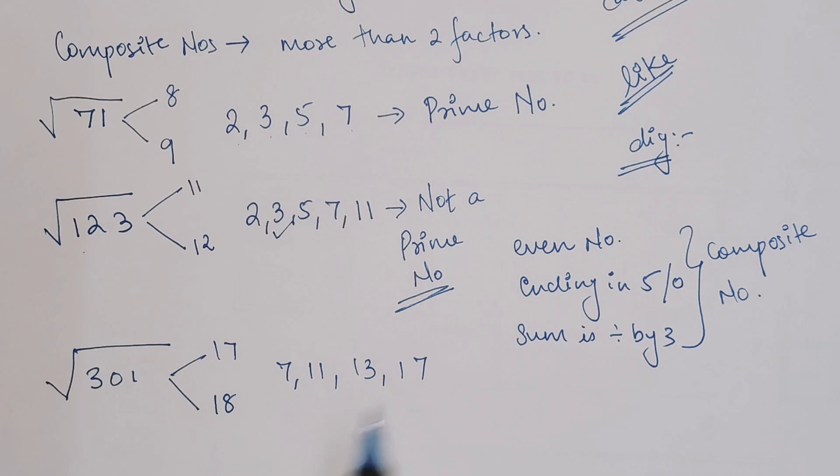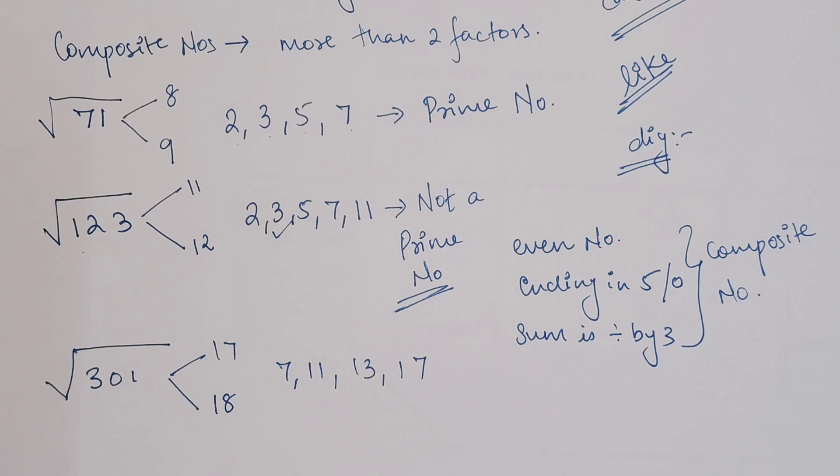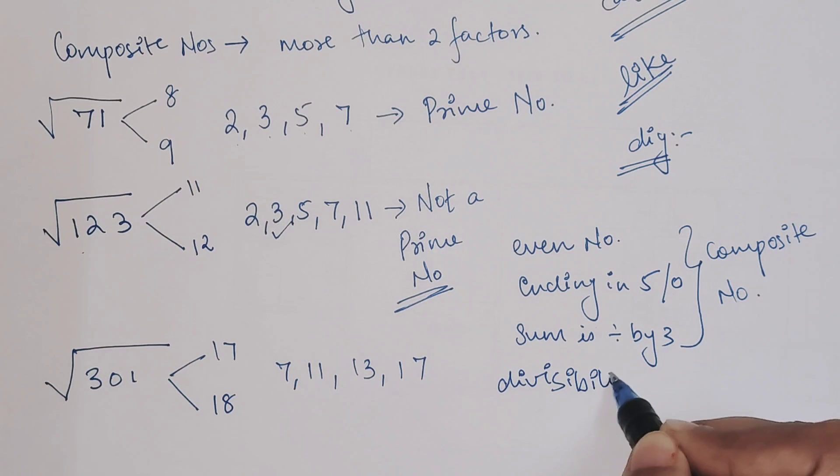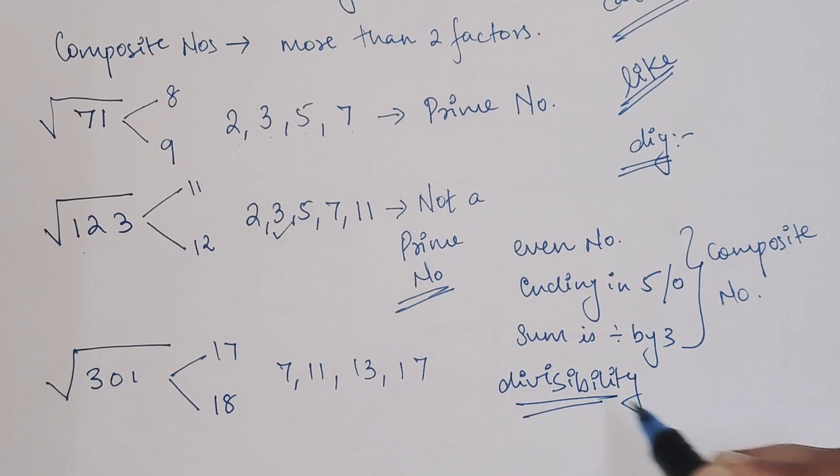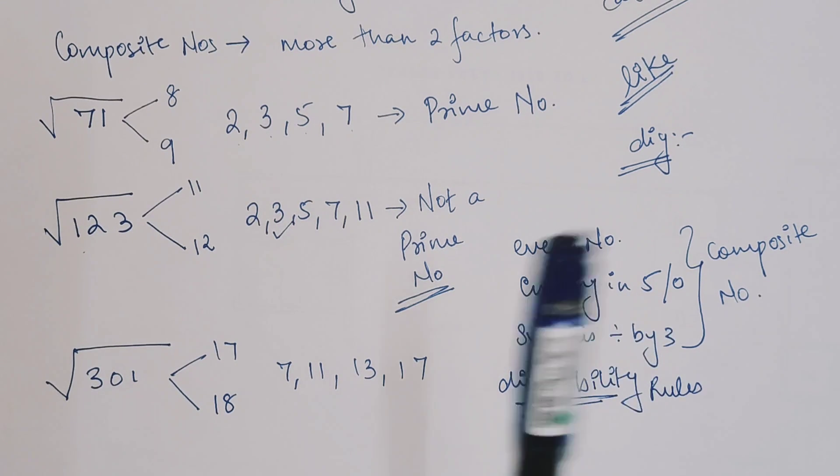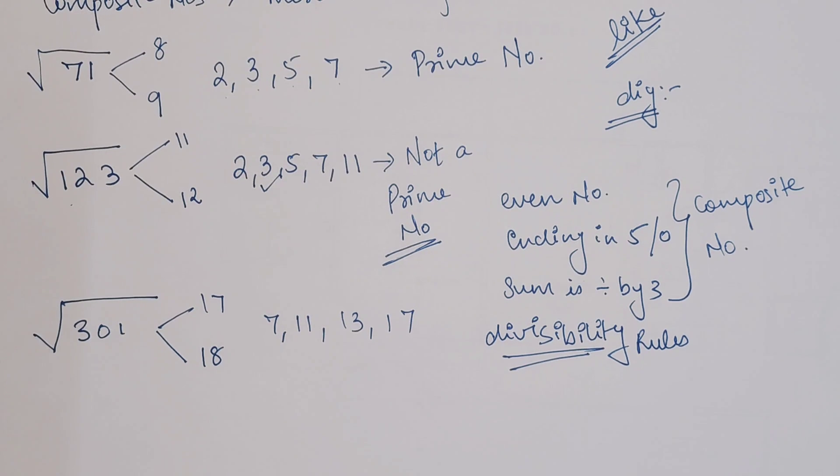If you check closely, for 7 it's not going to work, for 11 it will not work, 13 doesn't work, and for 17 it doesn't work. You might be wondering how I did this - I did this in my head using divisibility rules. I have made a separate video on divisibility rules for 11, 13, and 17. I'll put a link on top. From this I can say that 301 is a prime number.